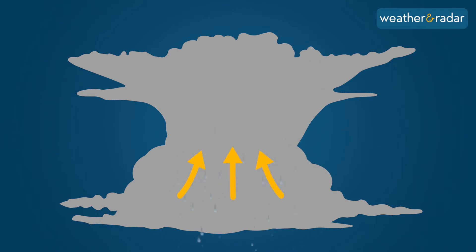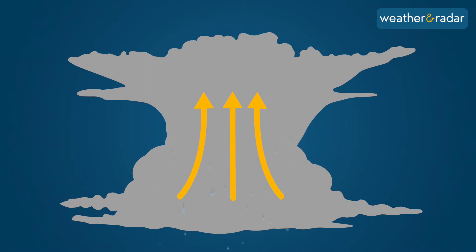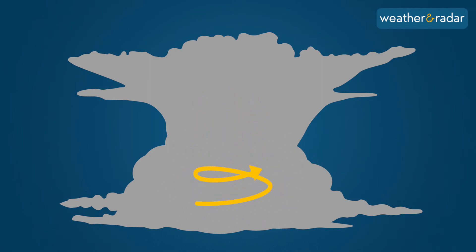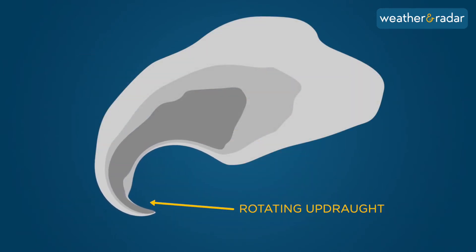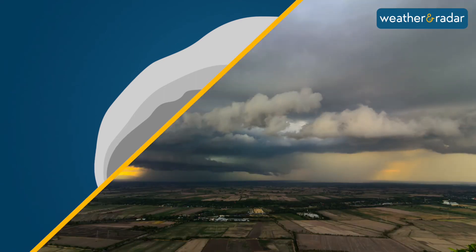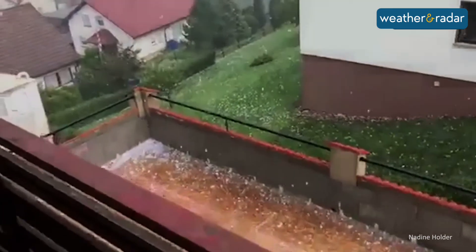But there is still one important ingredient missing for our supercell – wind shear. Without it, thunderclouds collapse without the drama. But when the wind power increases with height and pushes from different directions, it causes an imbalance and the thundercloud starts to rotate.